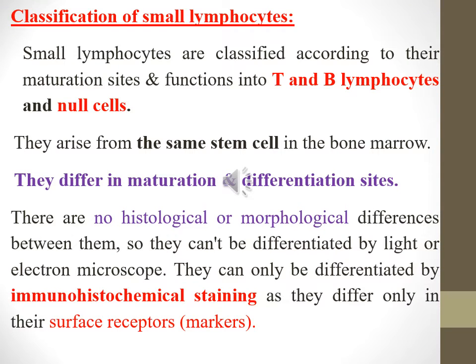Classification of small lymphocytes: small lymphocytes are classified according to their maturation sites and functions into T and B lymphocytes and null cells. They arise from the same stem cells in the bone marrow but differ in maturation and differentiation sites. There are no histological or morphological differences between them detectable by light or electron microscope — they can only be differentiated by immunohistochemical staining, as they differ only in their surface receptors or markers.